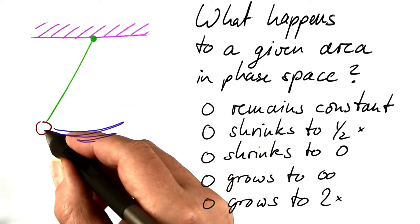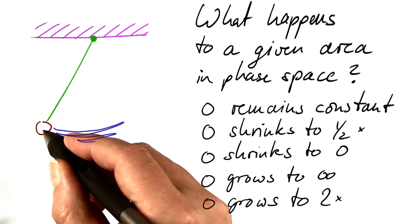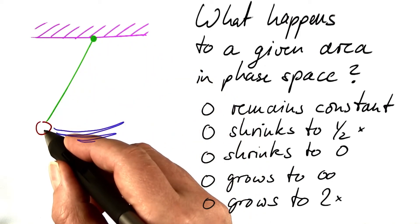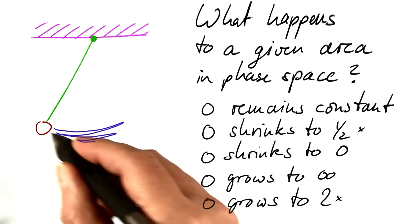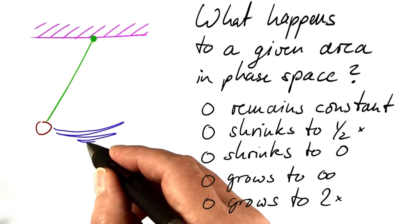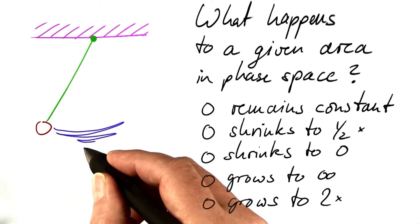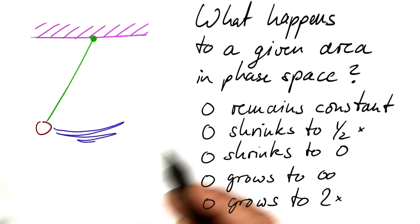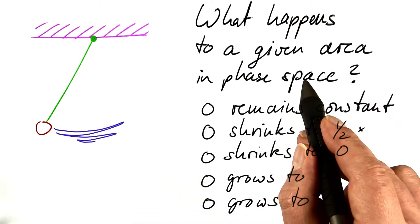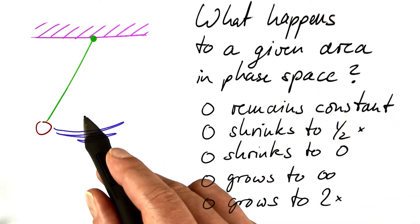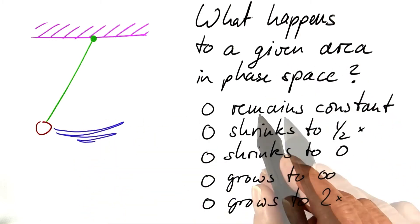Let's look at the position and the velocity of the weight that forms the end of a standard pendulum that swings and eventually stops swinging. What happens to a given area in the phase space of that system?